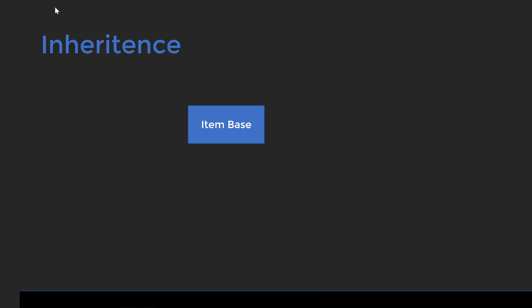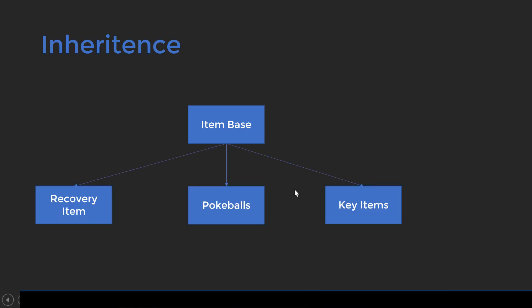To solve this problem we will be using inheritance. We'll create a base class called ItemBase, and then we'll create separate classes for each type of item. All these classes will inherit from the ItemBase class, so we can cleanly separate the logic of different item types into their own classes.